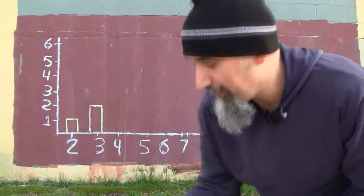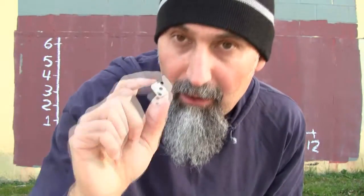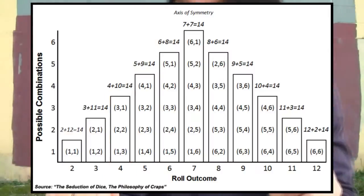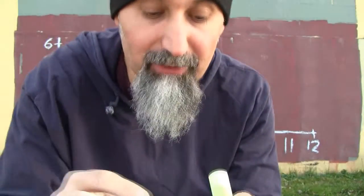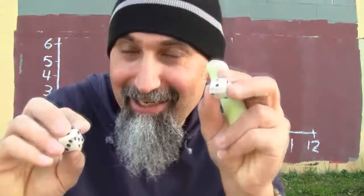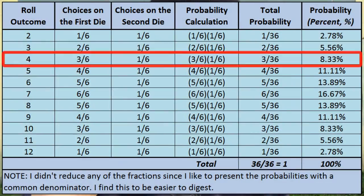To get a four, you can get a one, two, or three on the first die, and you have to match with the second die. If you get a one on the first die, you need a three on the second. If you get a two, you need a two. If you get a three, you need a one. So there are three possible combinations, and the probability is three out of six times one out of six, which is three out of 36.